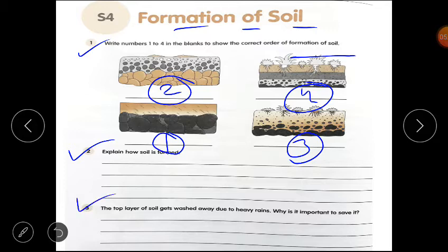Question number 3. The top layer of soil gets washed due to heavy rain. Why is it important to save soil? Students, plants grow on the top layer of soil. And if the top layer of soil is washed, it takes thousands of years to form soil, so we should save it. If there would be no soil, no plants would grow and life would come to an end.